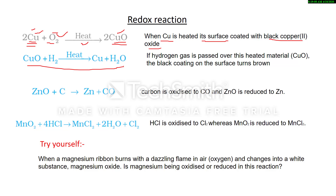Next example: zinc oxide (ZnO) reacts with carbon to give zinc and carbon monoxide. Carbon is oxidized to CO — oxygen is added to carbon. Zinc oxide is reduced to zinc — oxygen is removed from zinc oxide. Another example: manganese dioxide (MnO2) reacts with HCl to form manganese chloride, water, and Cl2.